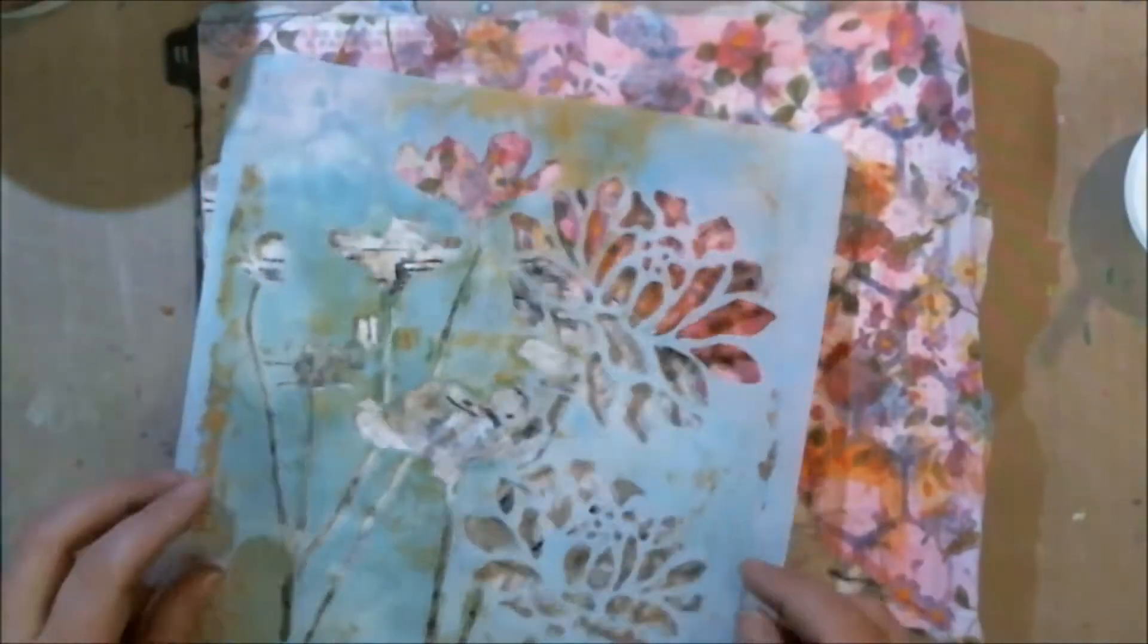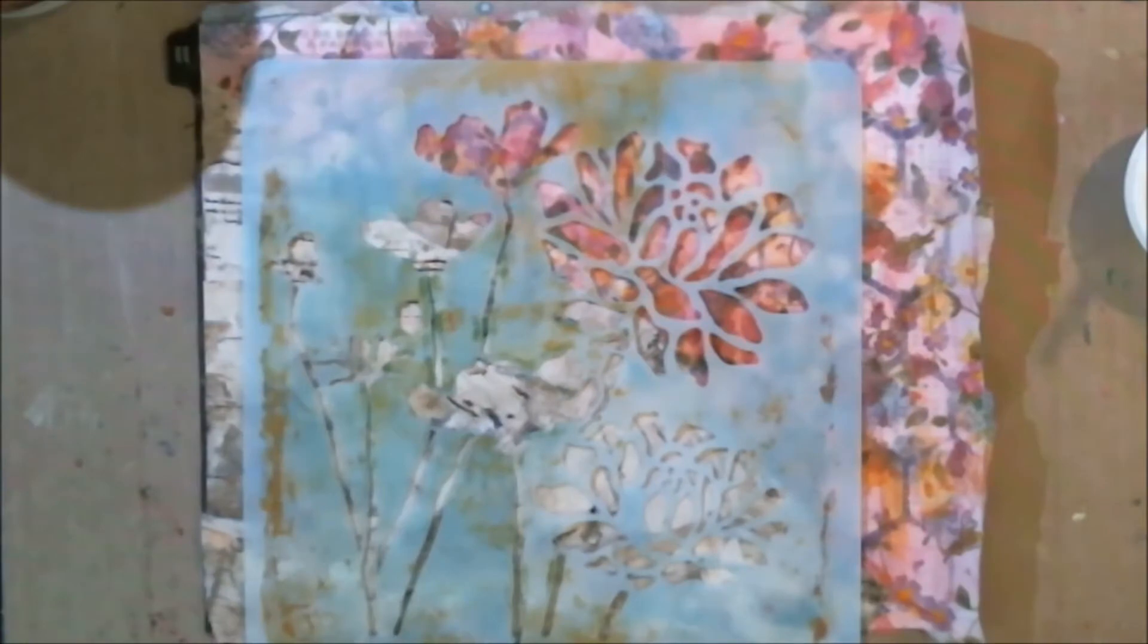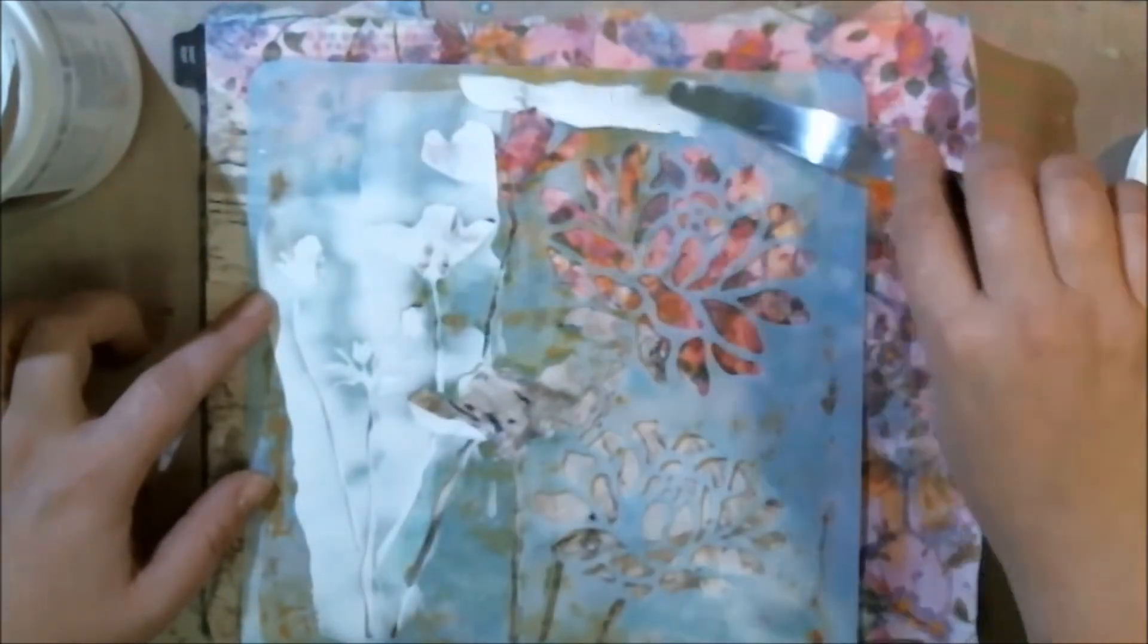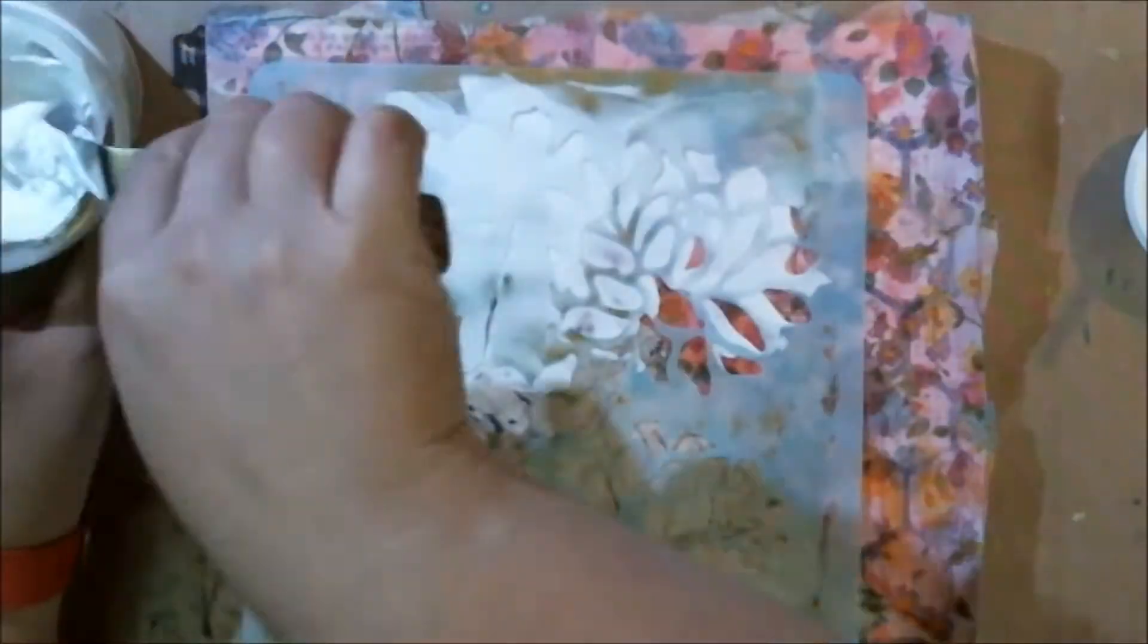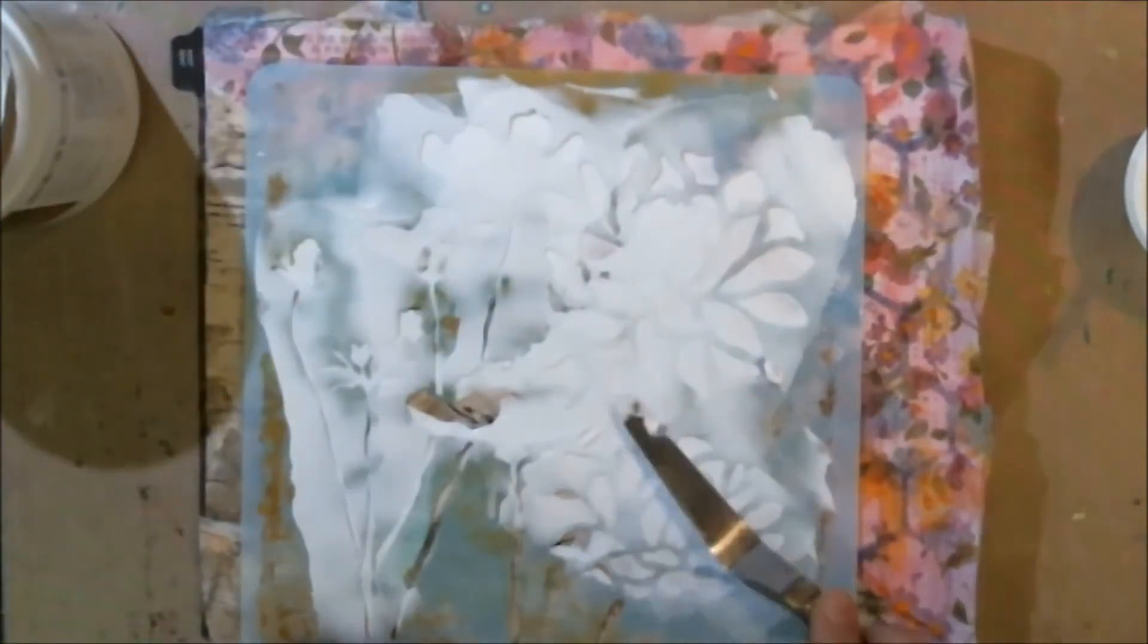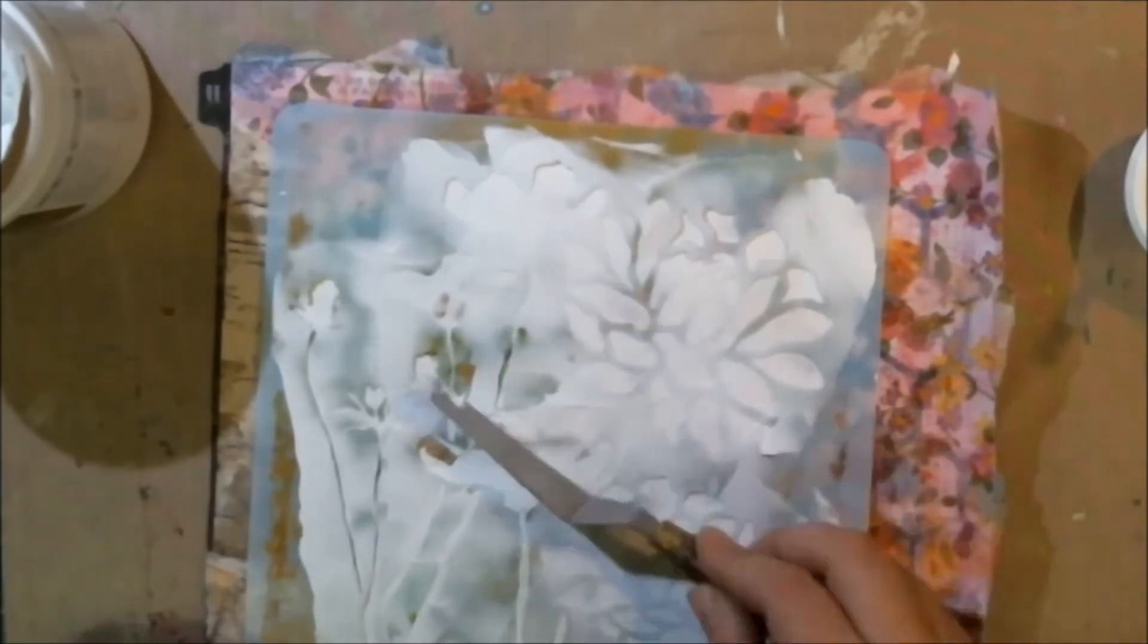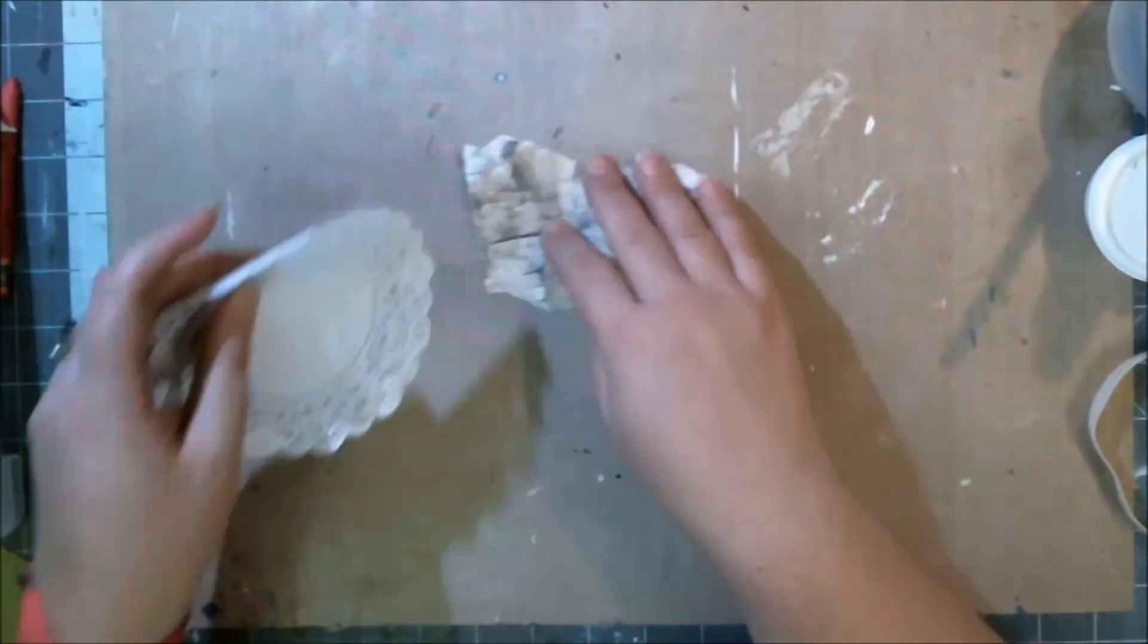Here it's nice and dry and I've pulled out this Donna Downey stencil. I'm going to put some Liquitex modeling paste through it. At this point I'm not even thinking about where the page break is. I want this to be a nice cohesive page and I want it to look like I cut it apart and it was all together at some point. That's why I use the washi tape on the back, so I can make spreads rather than individual pages.